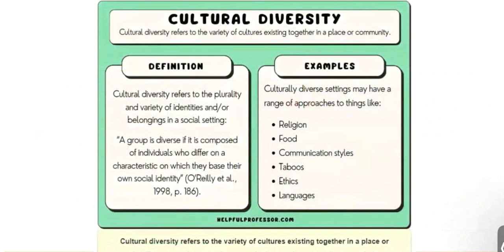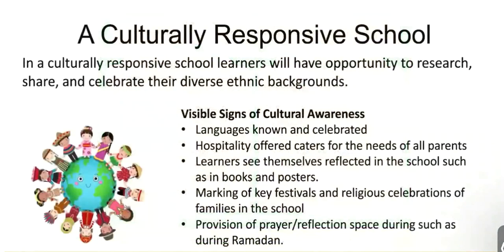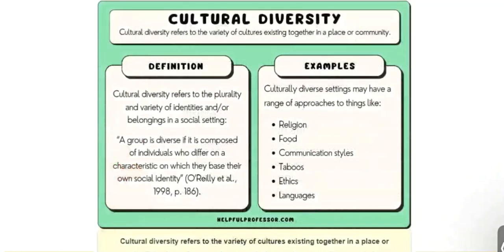It's important to look more closely at the definition of cultural diversity and some examples of things that we would maybe notice. When we think of cultural diversity, we consider how communities work and exist together. The examples of religion, food, communication styles, and things that are taboo in a culture, as well as ethics and language, are very important — some of them obvious, others more subtle, that perhaps take us by surprise sometimes.